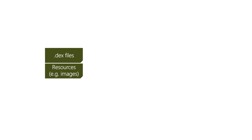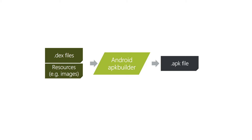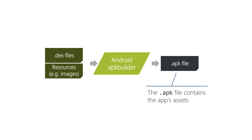Android apps are combined into a single file for deployment to a device called an application package, with an .apk extension. It's really just a zip file that contains all of your app's assets, including your executable code in DEX bytecode format, your layout files which are in a binary format, and all of your non-code assets like images.